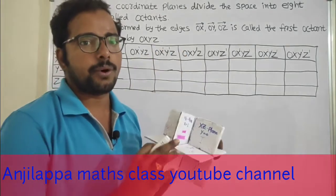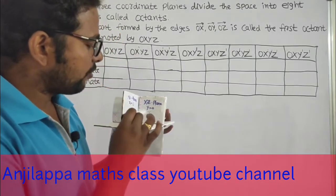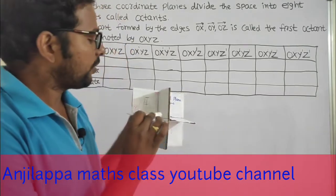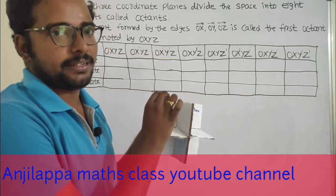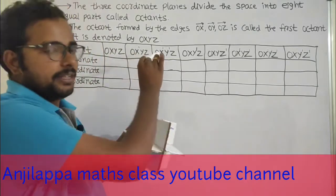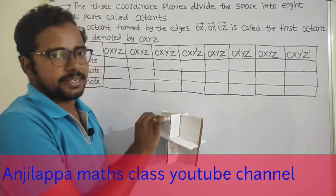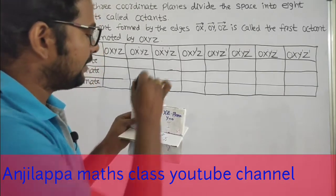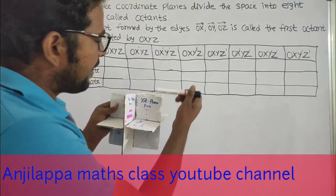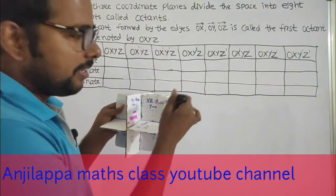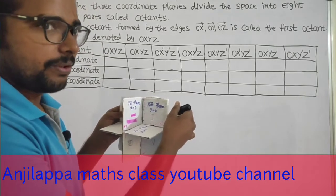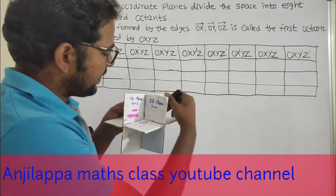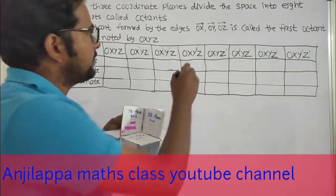The top four octants are the first, second, third, and fourth octants, and the bottom four are the fifth, sixth, seventh, and eighth octants. The first octant is found by OX, OY, OZ. The second octant is found by OX-dash, OY, OZ. The third octant is found by OX-dash, OY-dash, OZ. The fourth octant is found by OX, OY-dash, OZ.